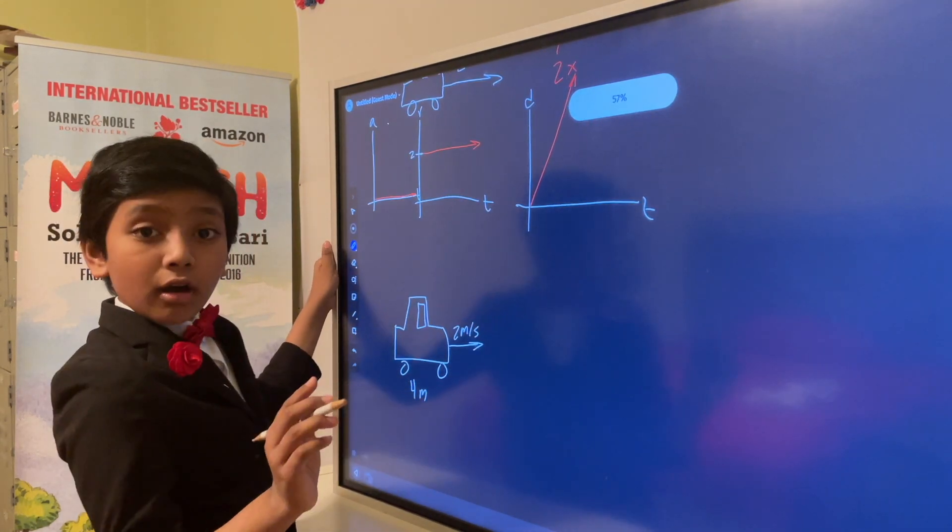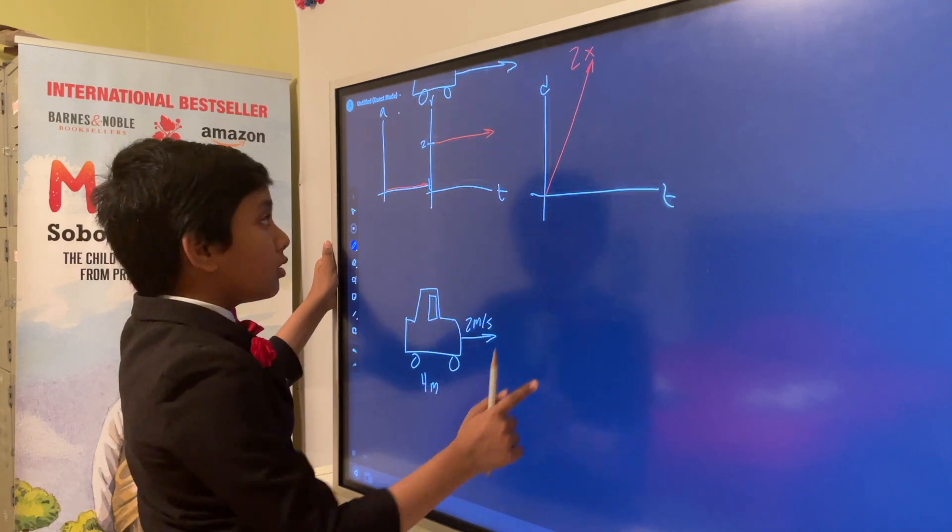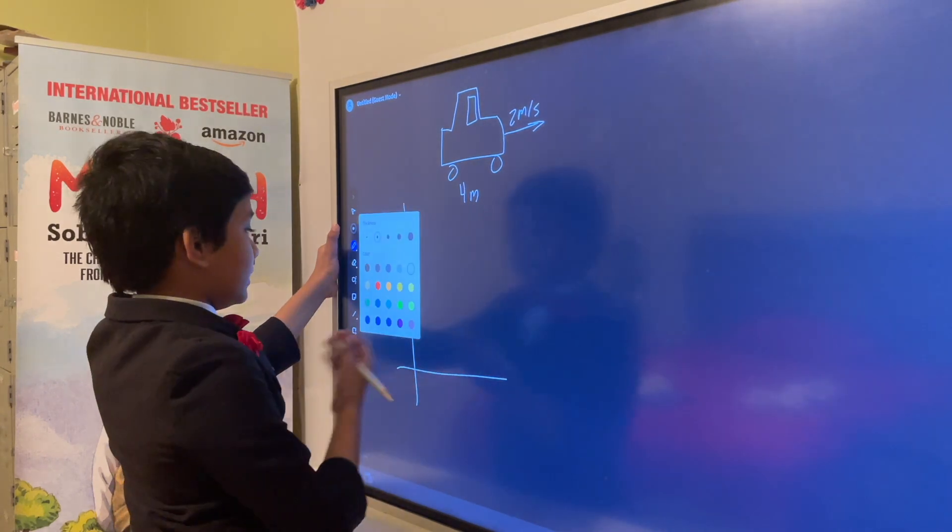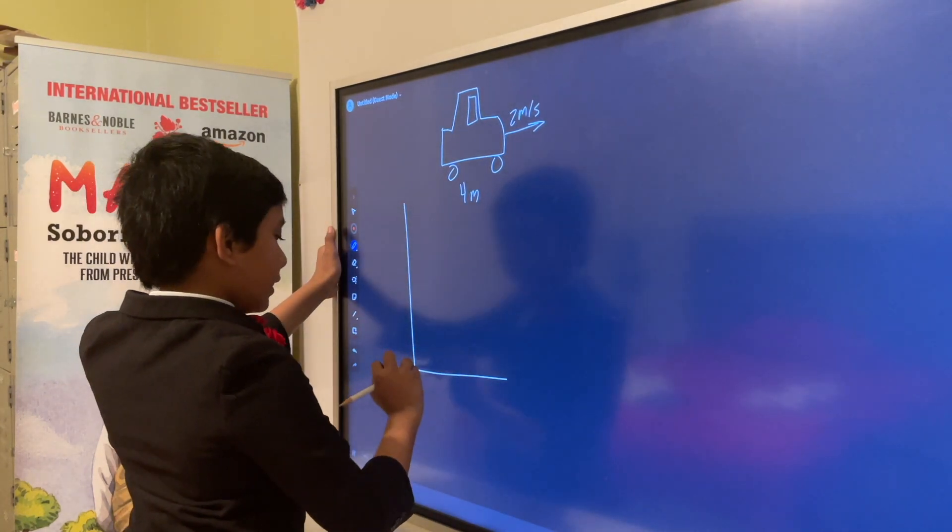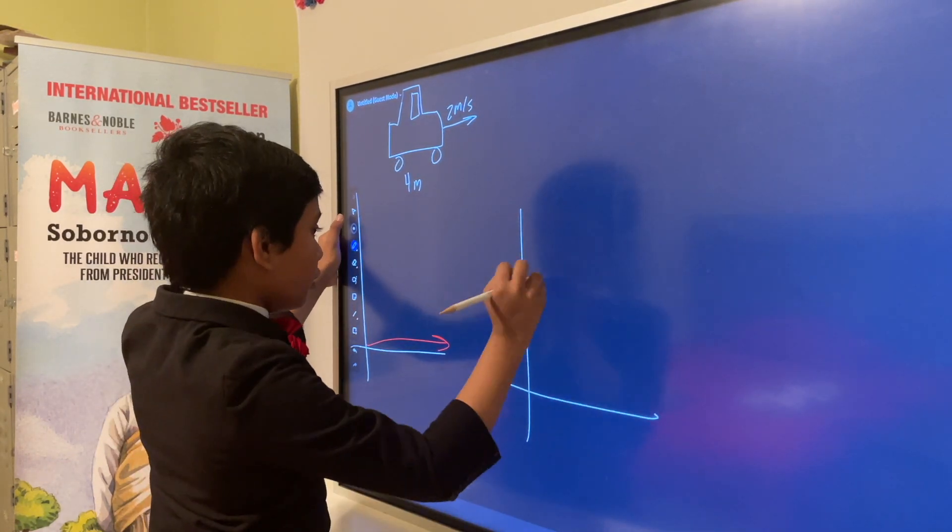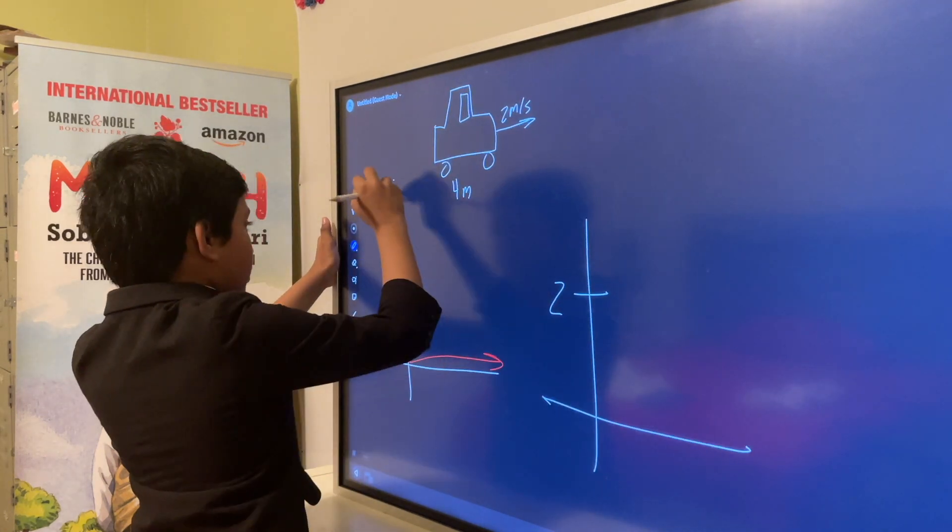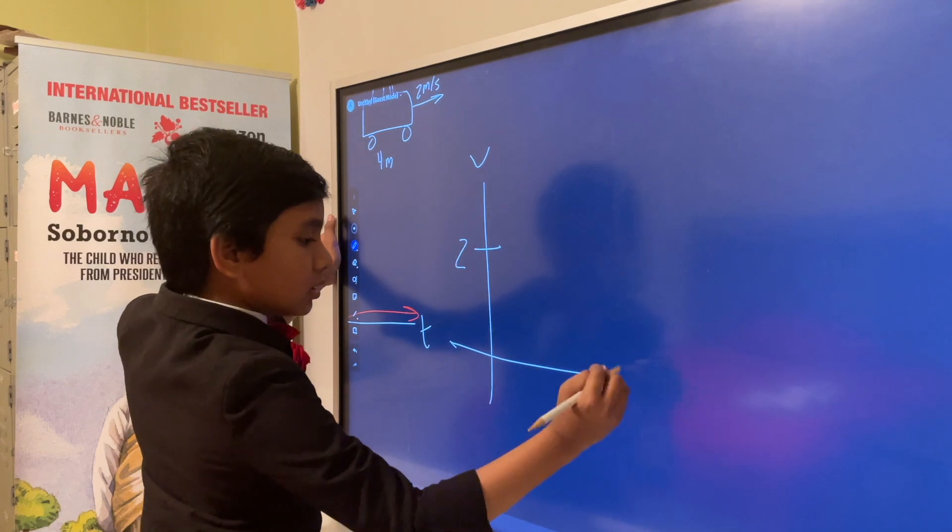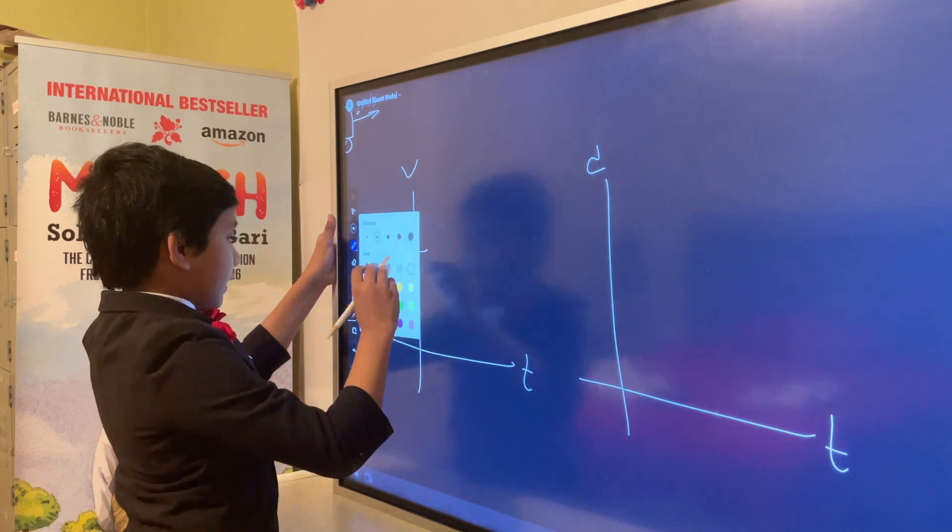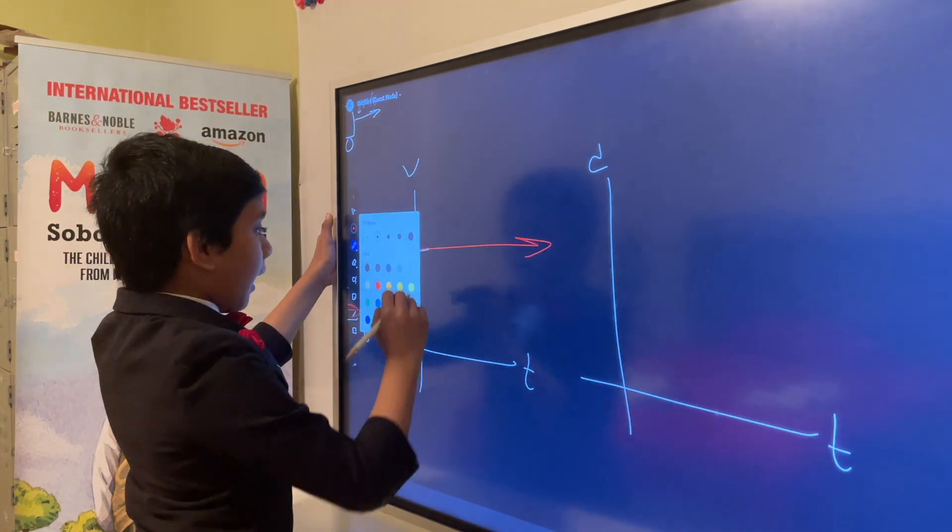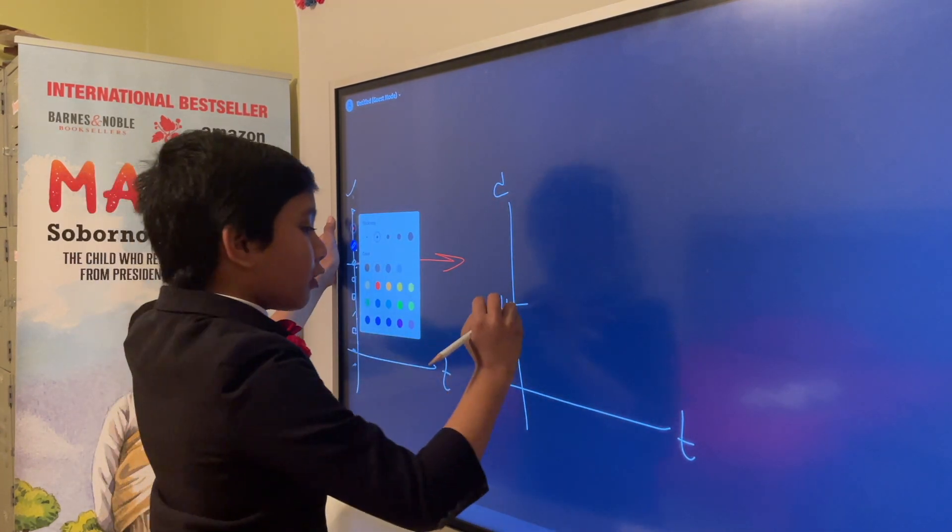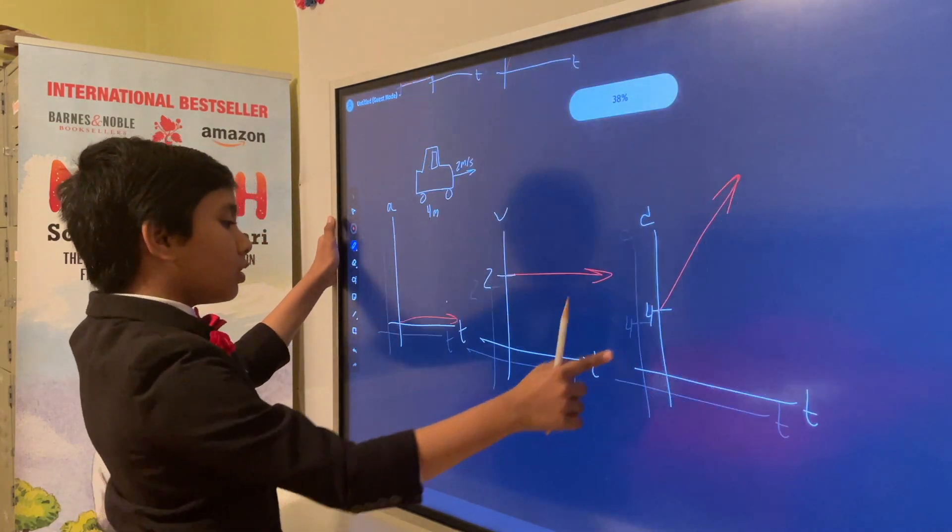So now, how we can graph this is really the same thing. The acceleration is still 0. The velocity is still 2. However, for distance, it's slightly raised a little bit, because we already start at 4 and then increase from there.